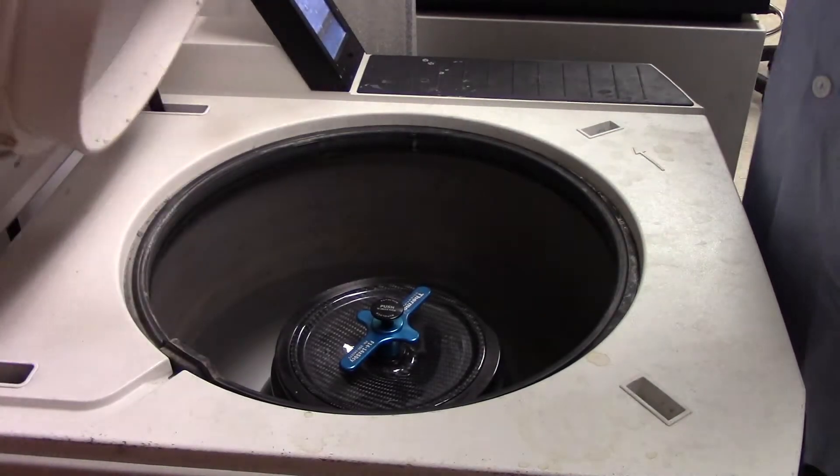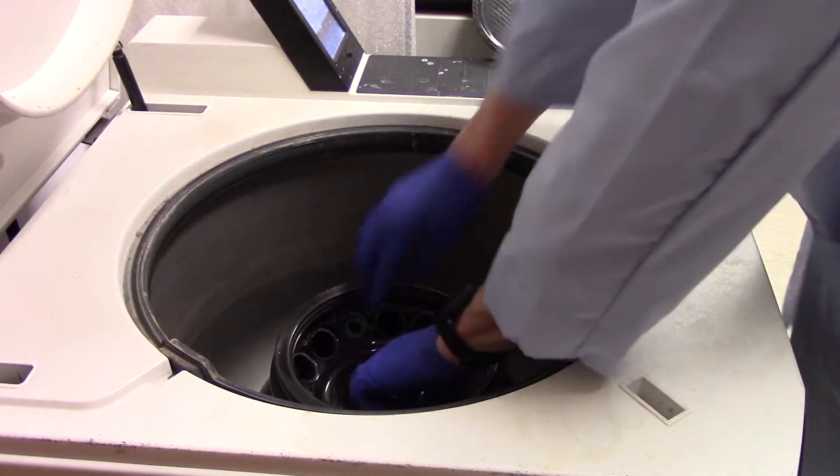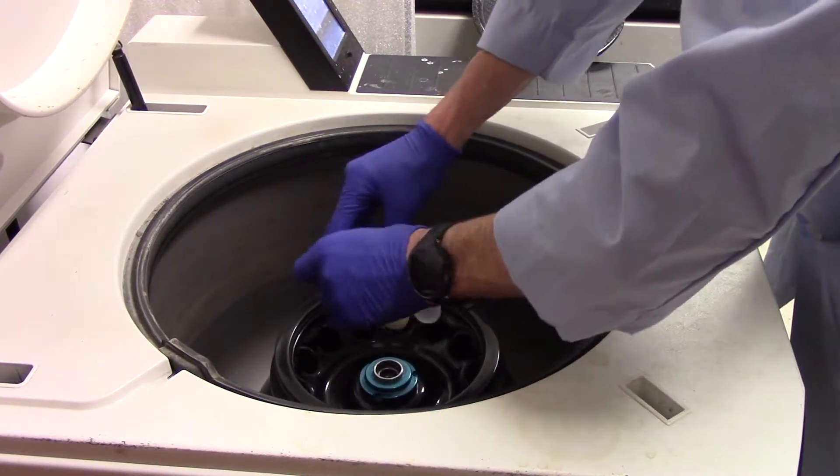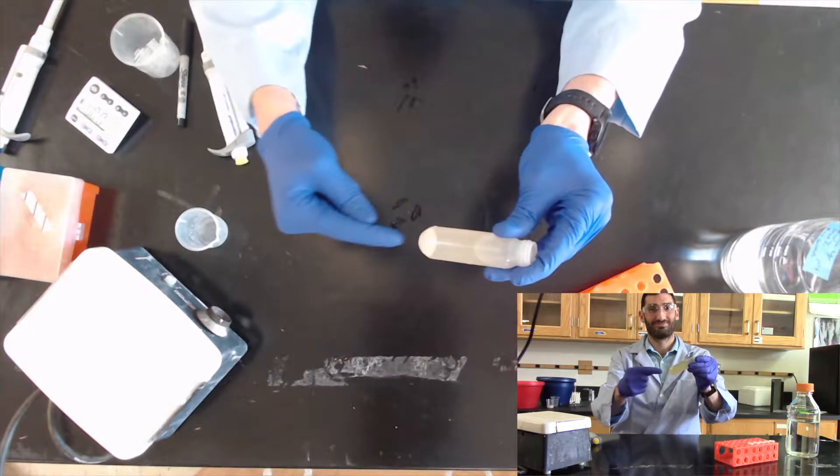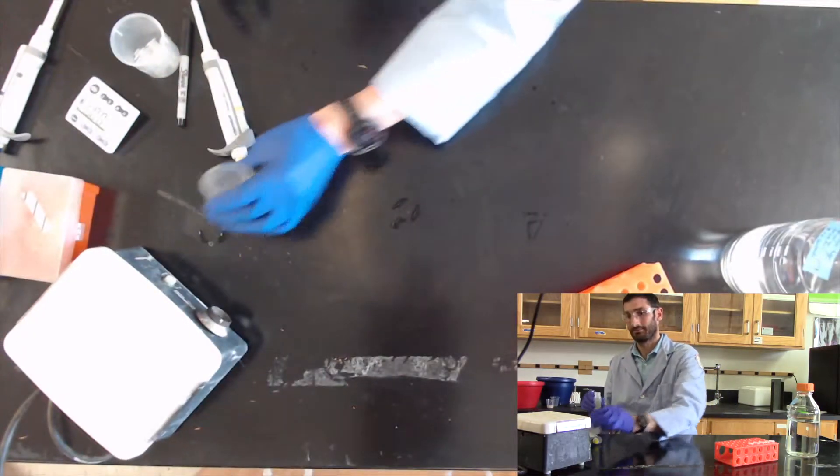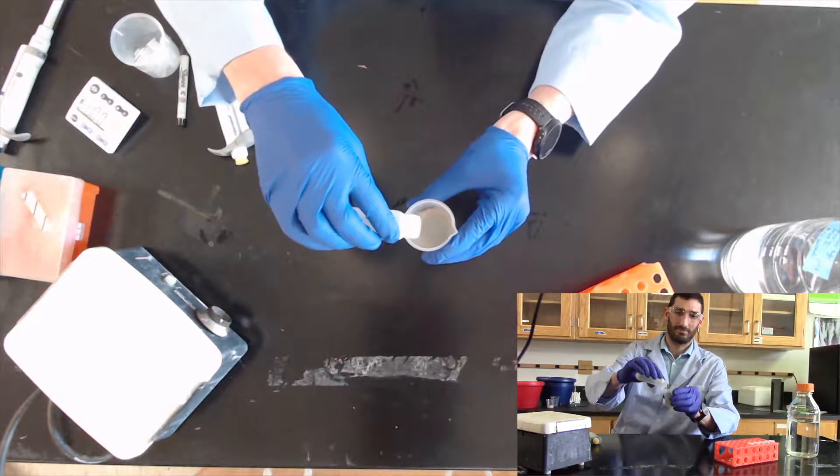When complete, open the door, remove the lid, and remove your tubes. Note the cell debris or the insoluble portion of the cells are at the bottom of the tube. Pour off the supernatant into a clean beaker.